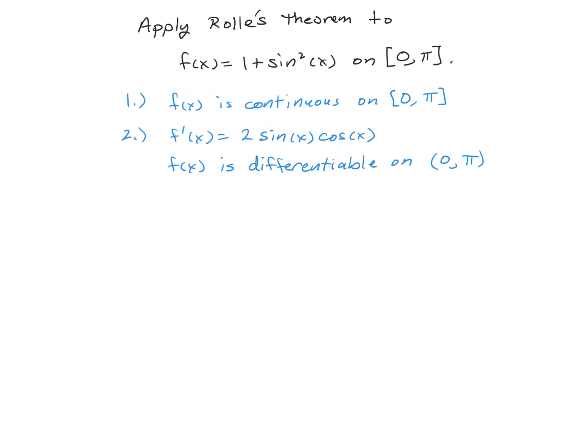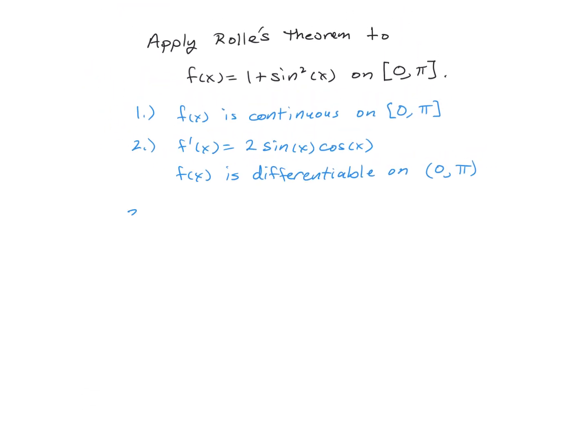The last thing to check for Rolle's theorem, hypothesis-wise, is the value of the function at our two endpoints. So, we need to calculate f of 0 and calculate f of pi, and make sure that they are equal to each other. Well, f of 0 is just 1 plus the sine of 0 squared, so that's going to be just a value of 1, and f of pi is 1 plus the sine of pi squared, which is 0 as well, so that's 1 plus 0. And since these two function values agree,